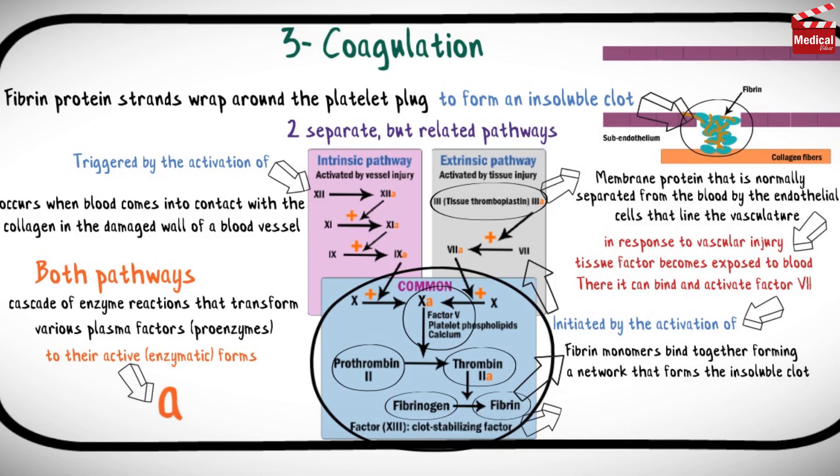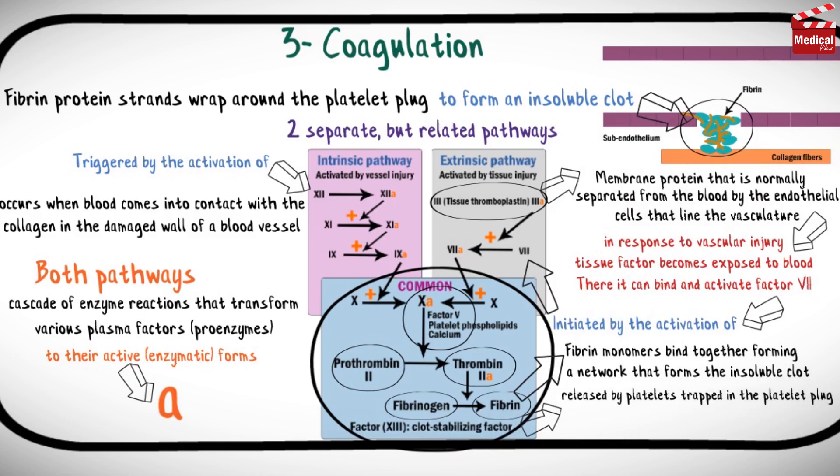Fibrin monomers then bind together forming a network that forms the insoluble clot. A final factor — factor 13, called clot stabilizing factor — is released by platelets trapped in the platelet plug and stimulates polymerization and cross-linking of fibrin strands.